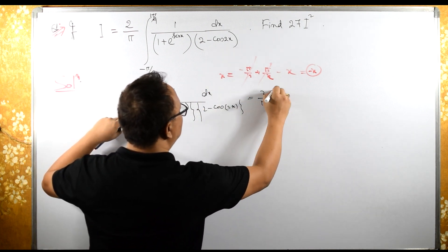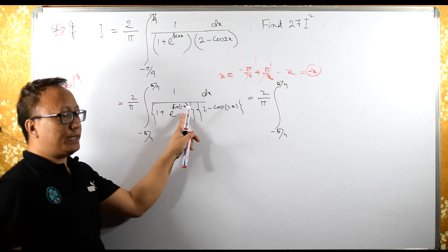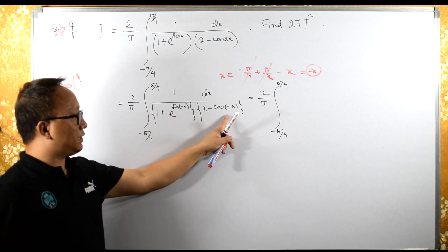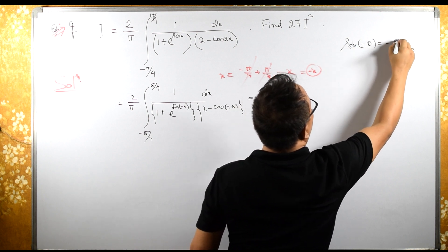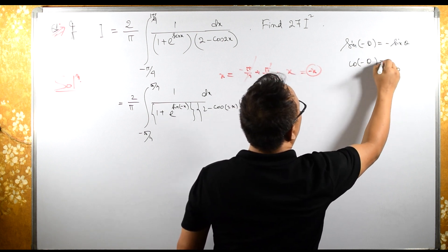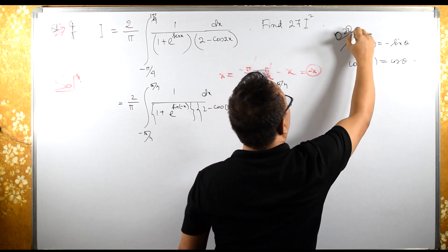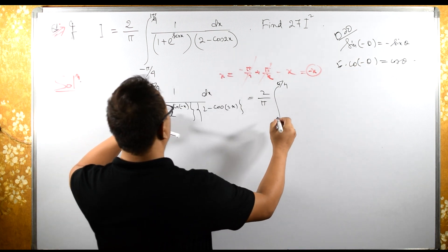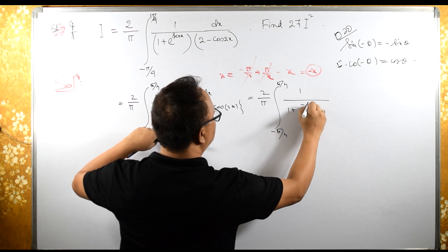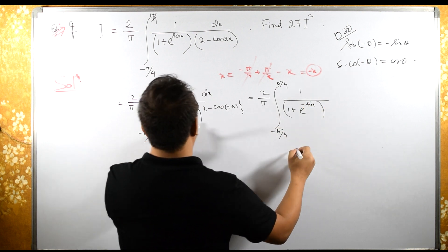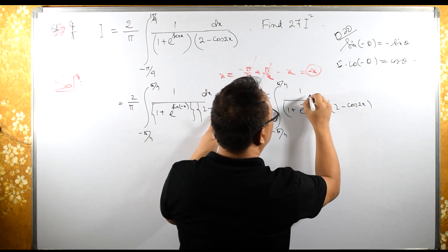Now, from minus pi by 4 to pi by 4. Sine x is an odd function and cos x is an even function. Therefore sine of minus theta equals minus sine theta, and cos of minus theta equals cos theta. So this becomes 1 upon 1 plus e raised to minus sine x, and the rest remains as 2 minus cos of 2x dx.